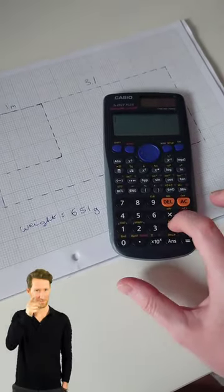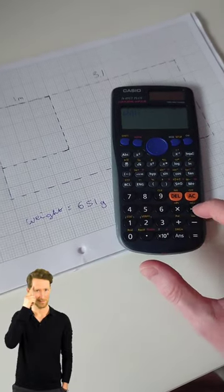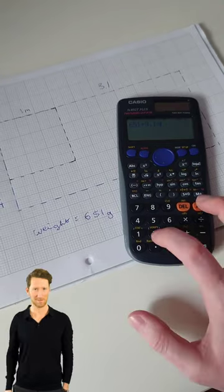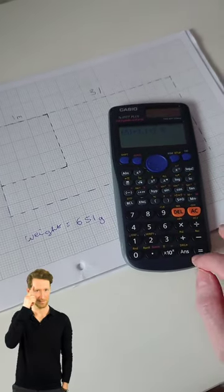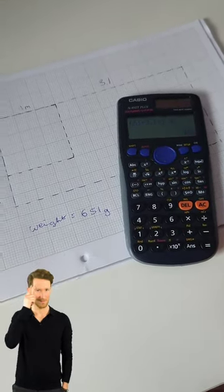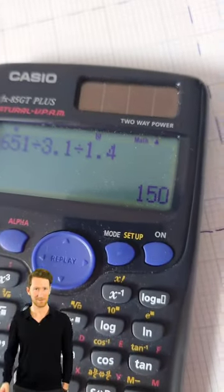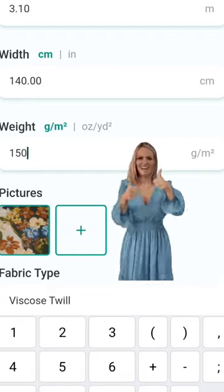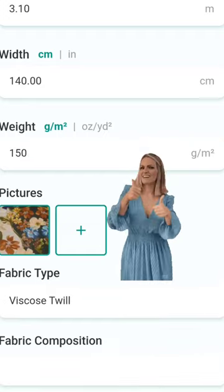I divide the total weight, 651 grams, by the length 3.1 and the width 1.4 to get the estimated weight for 1 by 1 meter. So 150 grams per square meter is a pretty classic weight for a viscose twill, and I can now add that to my hub.